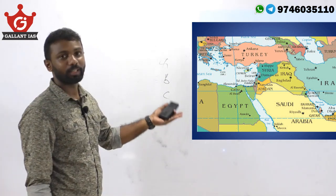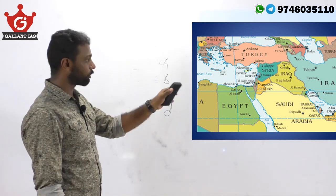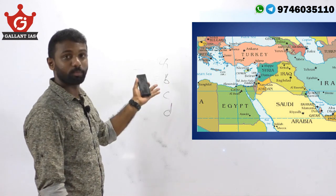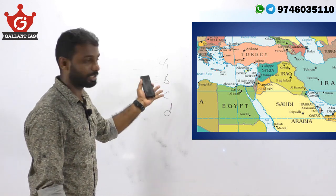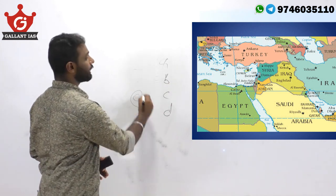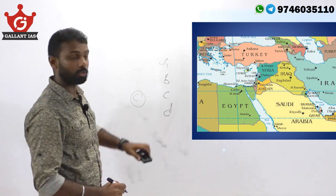Lebanon and Syria are the only countries in this question which share a border with the Mediterranean Sea. So the answer is option C — 3 and 4 only.